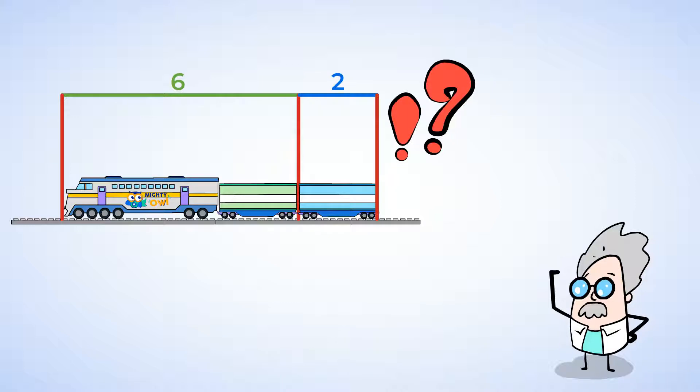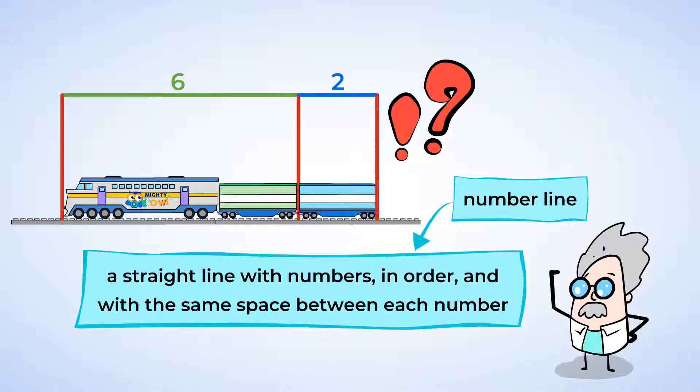Guess what? We don't actually need to use the measuring tool for adding and subtracting. We can model the same thing using something called a number line. A number line is a straight line with numbers in order, and with the same space between each number. The space between each number can be counting by ones or skip counting. Basically, it's a ruler without any units. So let's make a number line together so you can see what this means.